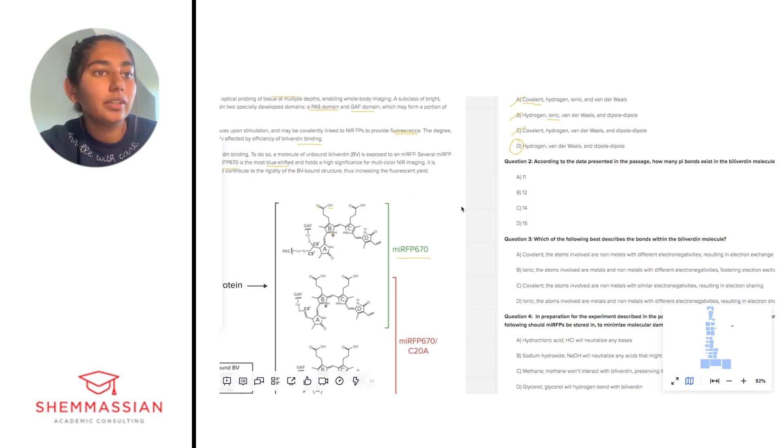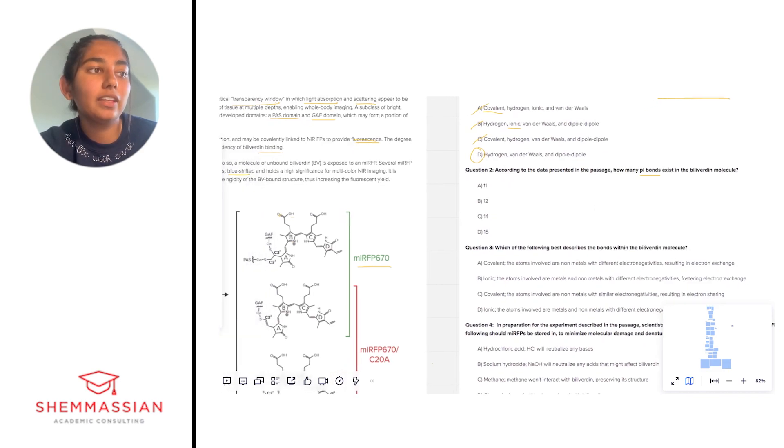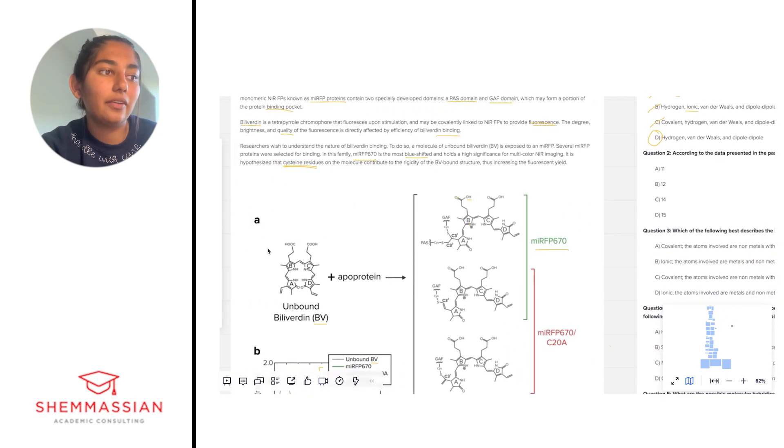Number 2: According to the data presented in the passage, how many pi bonds exist in the BV molecule? If we're thinking about how two atoms bind together, the first bond they make is going to be called a sigma bond, and any bond they make in addition to that will be a pi bond, and that is based on hybridization. So we're basically going to be looking at any kinds of double bonds in this molecule. Let's look over at the BV molecule, which they gave us as structure, and count the bonds.